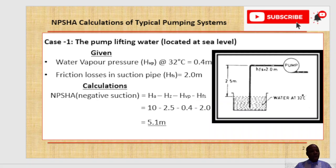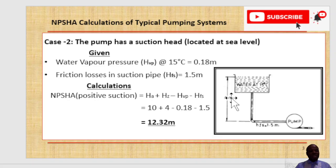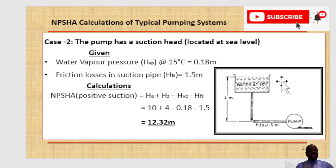Now we look at Case 2. In this case your suction tank is located above the pump centerline. When you have this configuration, the pump has a suction head — it is a positive suction system. How you obtain NPSHA for this kind of system is different from Case 1, where the suction tank is located below the pump centerline.